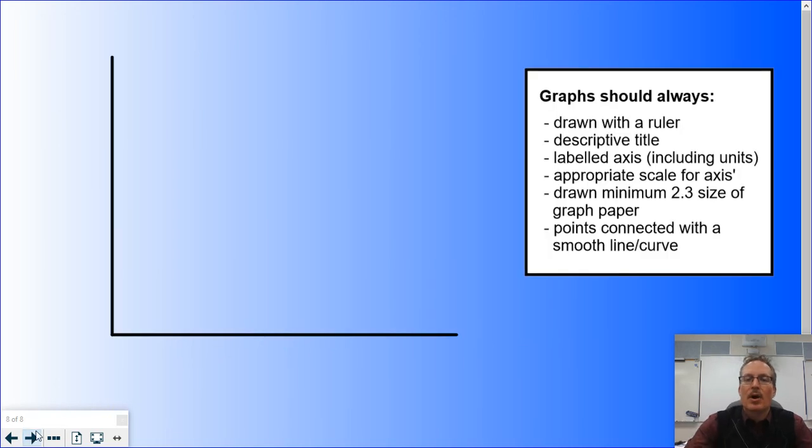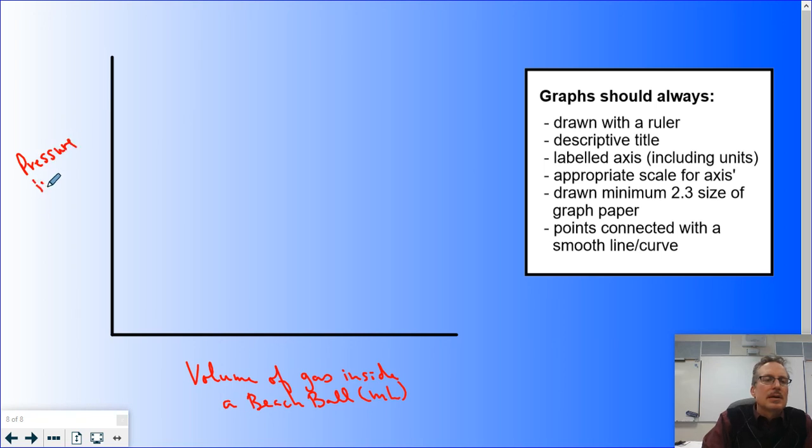We could graph this if we wanted to. We have our y-axis, x-axis. MIX, x-axis is for manipulated. We manipulated the volume of gas inside a beach ball. I would assume the volume would probably be in milliliters. We also are going to then y-axis. DRY, that's my responding or dependent variable. This is going to be the pressure inside beach ball. The pressure could be measured in atmospheres, kilopascals. I'm going to choose kilopascals, because that's a unit we're going to use in Chem 20.